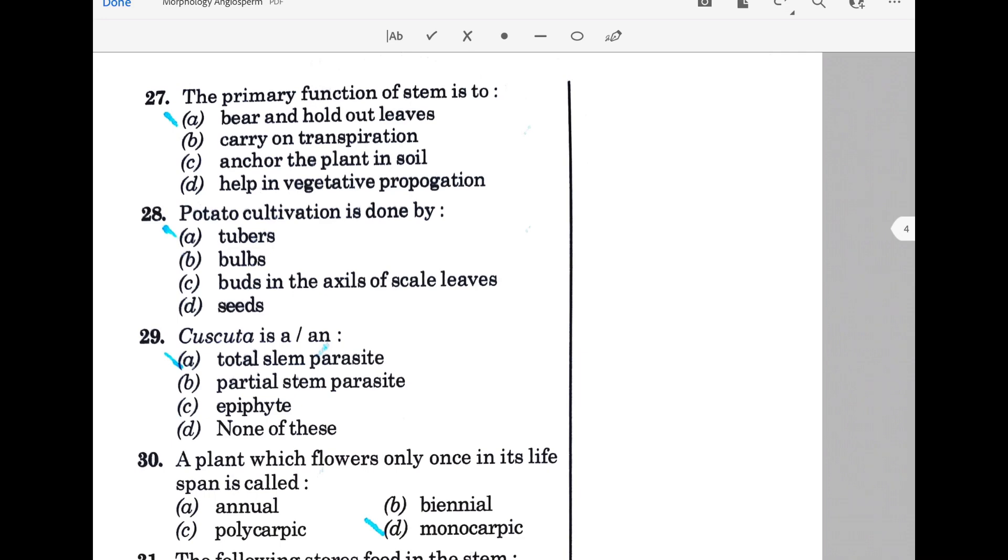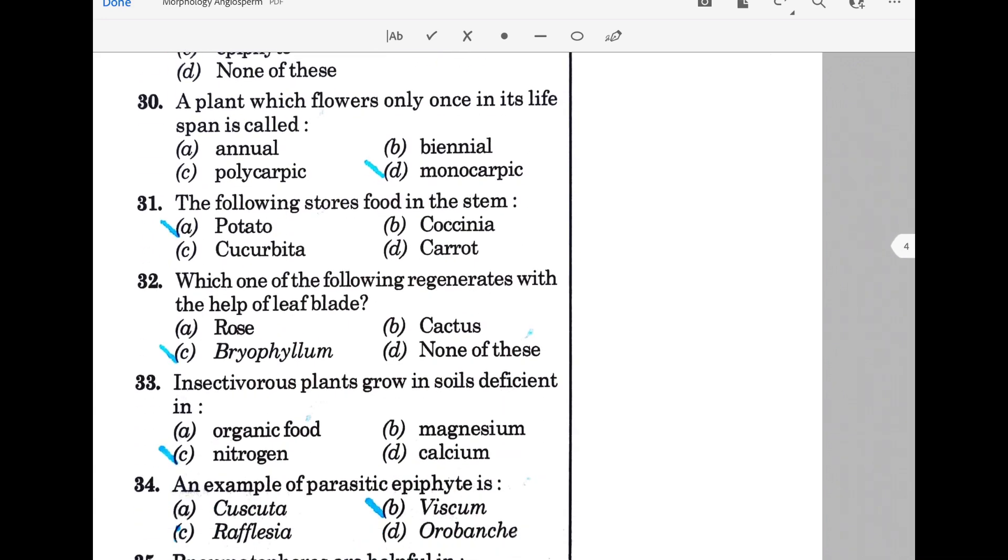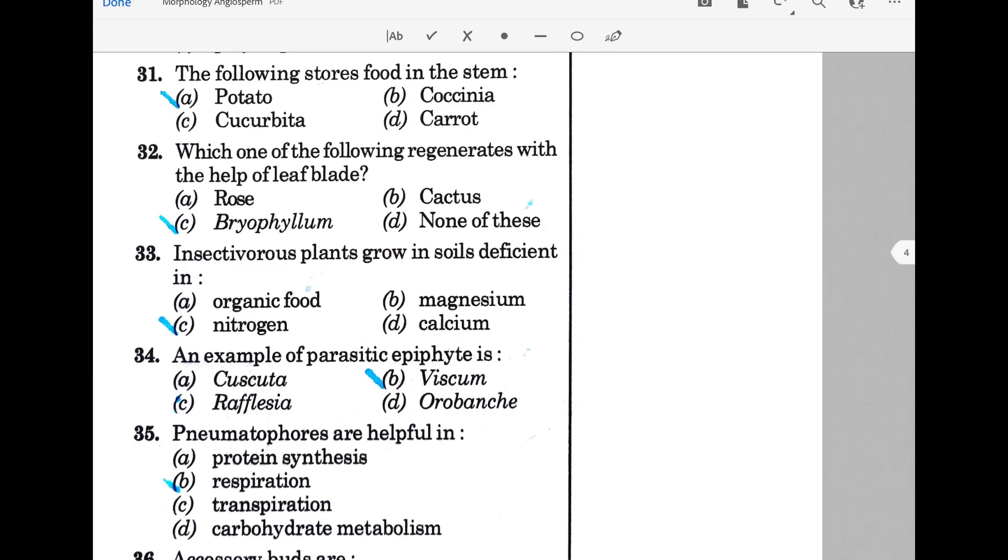The primary function of stem is to bear and hold out leaves. Potato cultivation is done by tubers. Cuscuta is an example of a total stem parasite. A plant which flowers only once in its lifespan is called monocarpic. Potato stores food in the stem. Bryophyllum regenerates with the help of leaf blades.